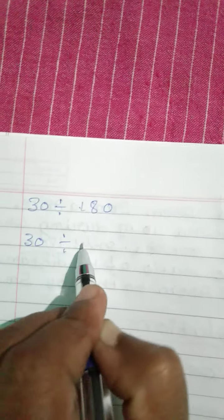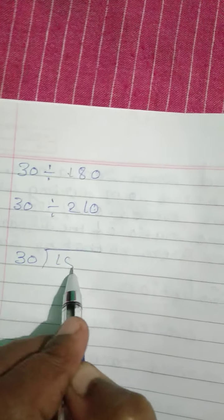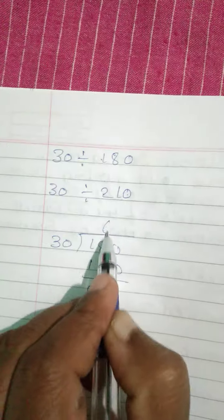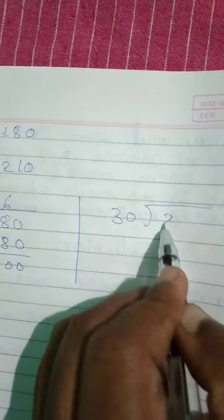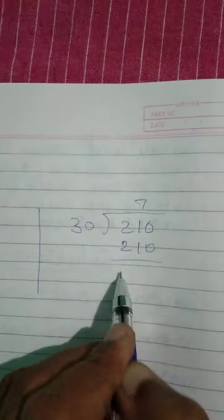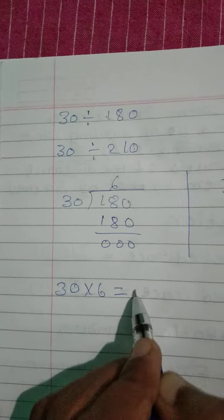Now divide both the numerator and denominator by HCF 30. 30 divided into 180 equals 6. 30 divided into 210 equals 7.